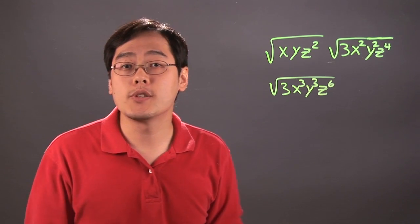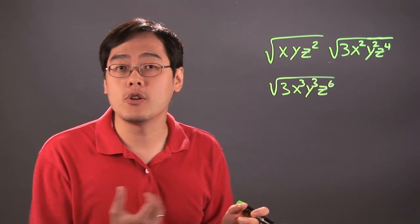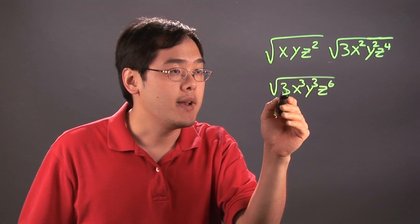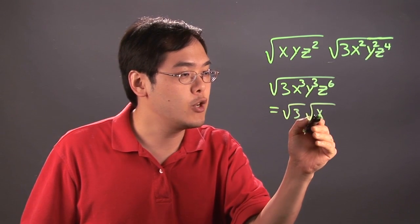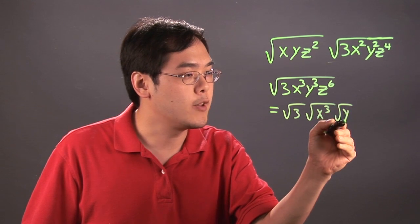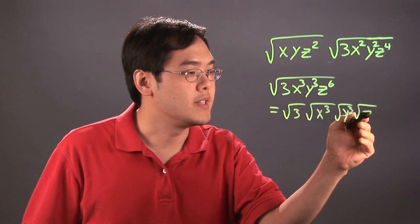Where you go from there is you want to simplify as much as you can, get as many terms out of the radical as possible. You can think about it as square root of 3, square root of x³, square root of y³, and square root of z⁶.